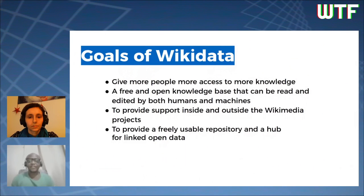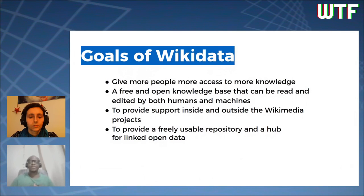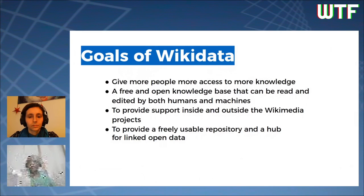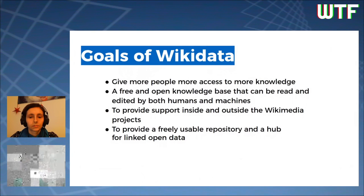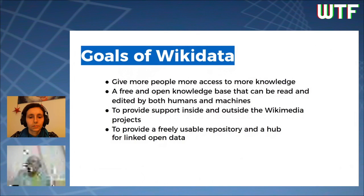Wikidata has a vision: to give more people more access to more knowledge. Wikidata gives access to information regardless of the language people speak. Because it is multilingual, it uses translations of so-called Q numbers into different languages, helping support smaller Wikimedia projects by letting them benefit from work done by the bigger projects. Applications outside of Wikimedia can also benefit from the rich data sets. In a nutshell, Wikidata can be thought of as an online repository of structured data that anyone can edit and reuse.